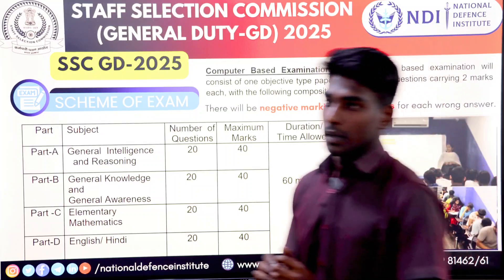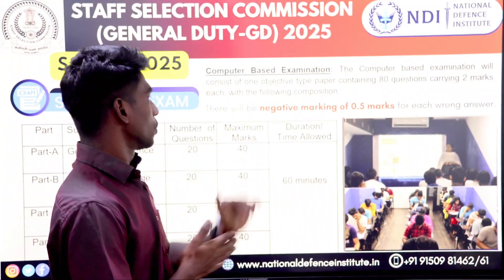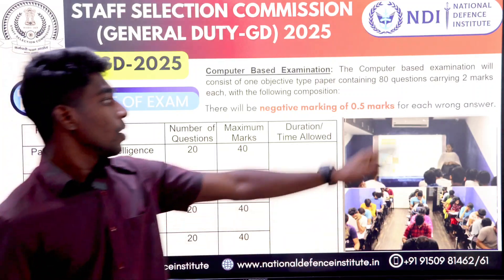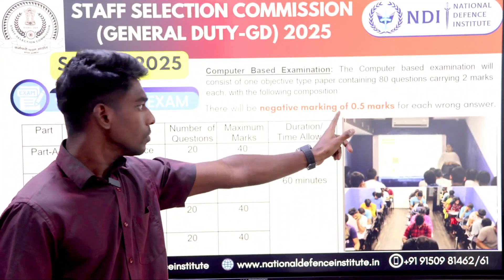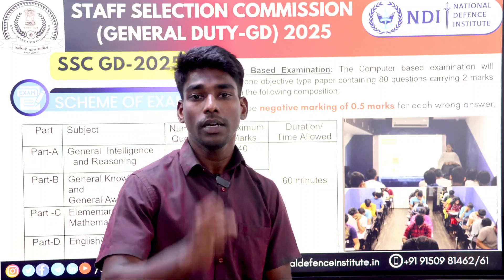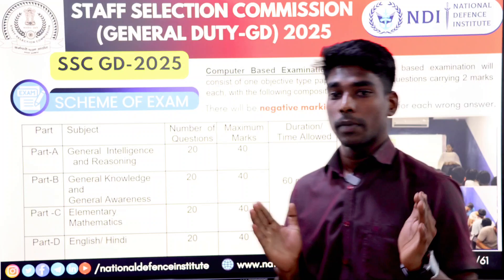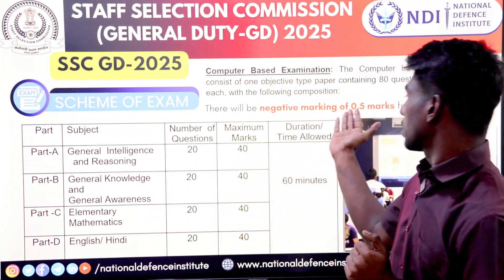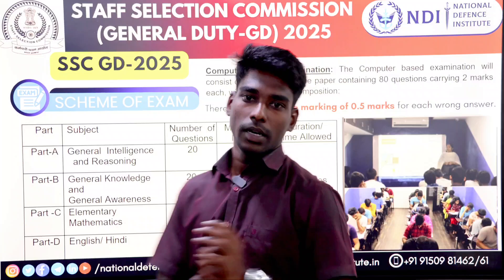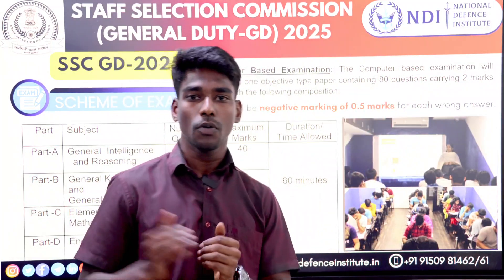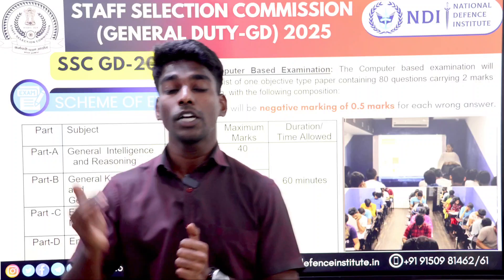There are negative markings — as with all central government exams, negative markings apply. One correct answer is 2 marks, and one wrong answer carries a negative marking of 0.50 marks. So be very cautious about negative markings.